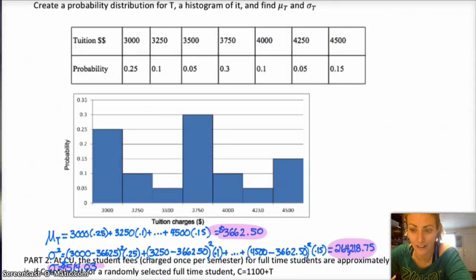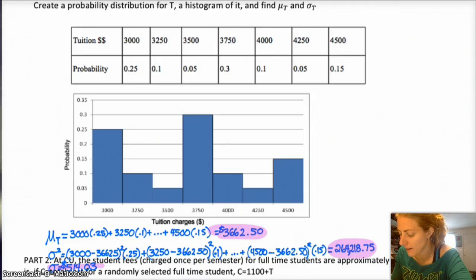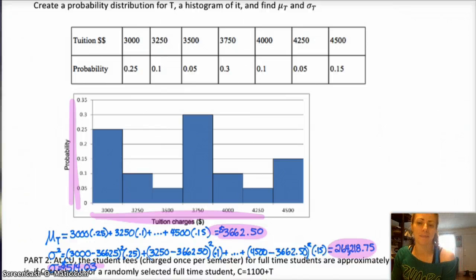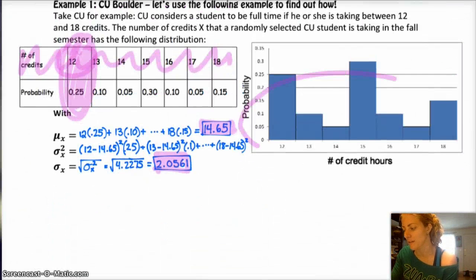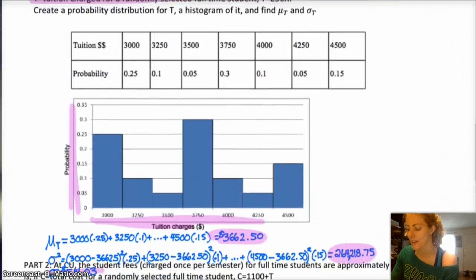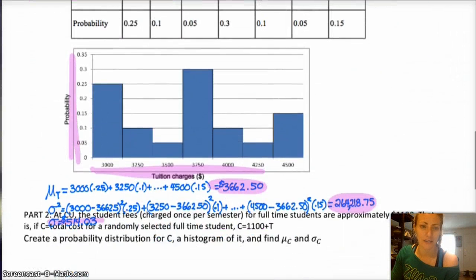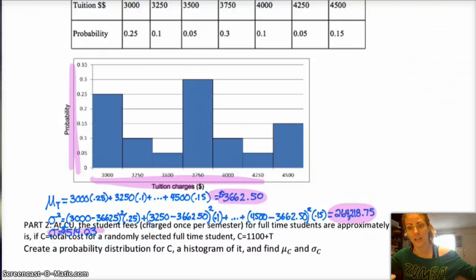Now, since I changed my scale, obviously, my tuition charges are on my x-axis, and then on my y is just my probability. But notice, it looks exactly the same as this one, but that's because I changed my scale, right? If my scale had stayed the same, it would have been way further spread out. But I think this makes the most sense given the data.